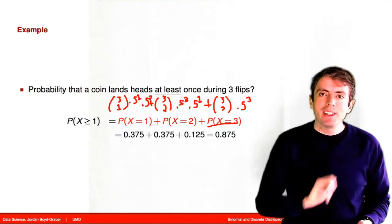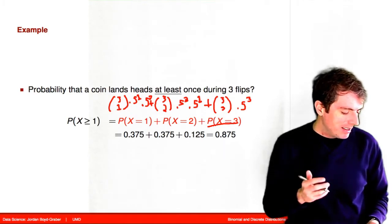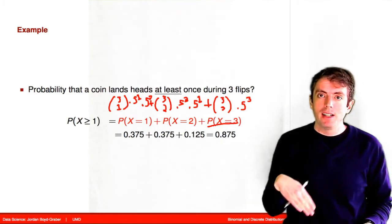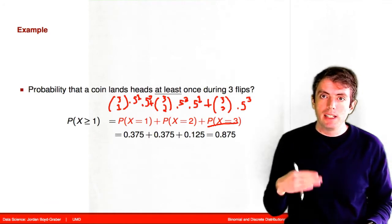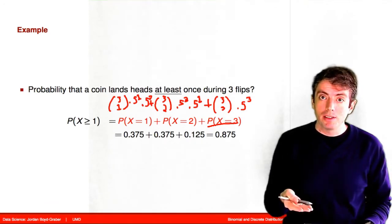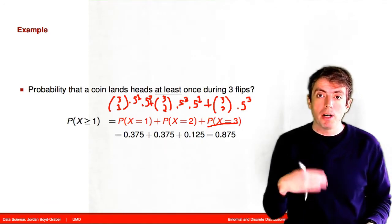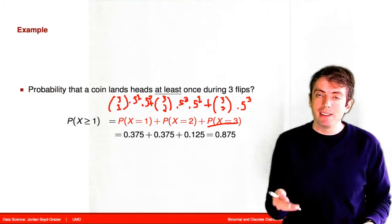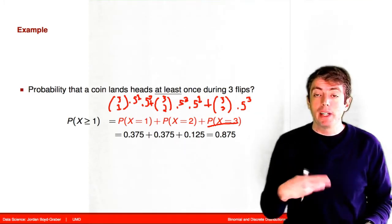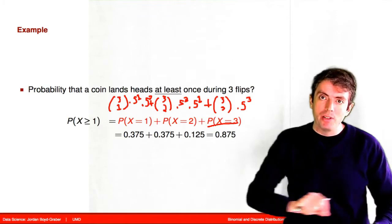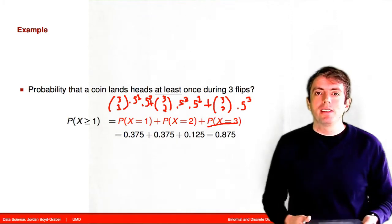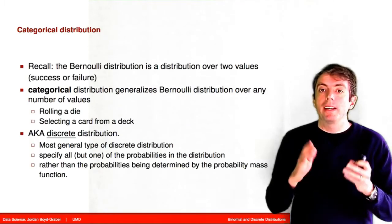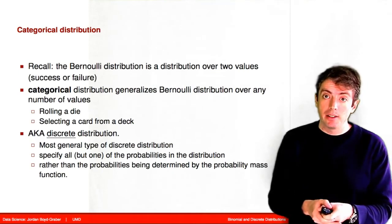One thing you should notice is that this is symmetric to the probability of getting three tails. So we could have just computed the probability of getting three tails and taken one minus that to get the same answer — because all of the events in an outcome space have to sum to one. Now we can extend the Bernoulli distribution in another way: we can consider more than two different outcomes.